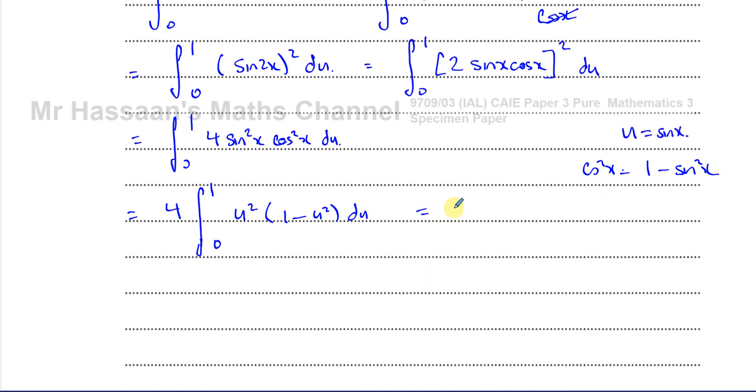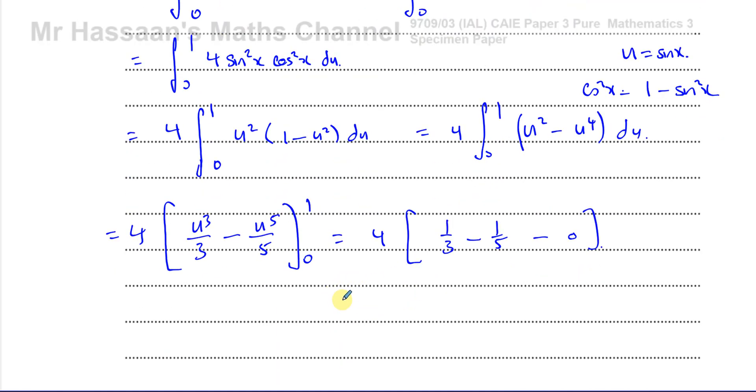I always like to write the constants outside, so I'll put 4 outside. I still haven't integrated, so I've still got between 1 and 0. Sine squared X is going to be U squared, and cosine squared X is going to be 1 minus U squared, integrated with respect to U. Let's expand it first. We have U squared minus U to the power of 4, all of that integrated with respect to U. When I integrate, this is going to be adding 1 to the power, dividing by the new power. So I have 4 times 1 third minus 1 fifth, which is 4 times 2 over 15, which is 8 over 15 square units.